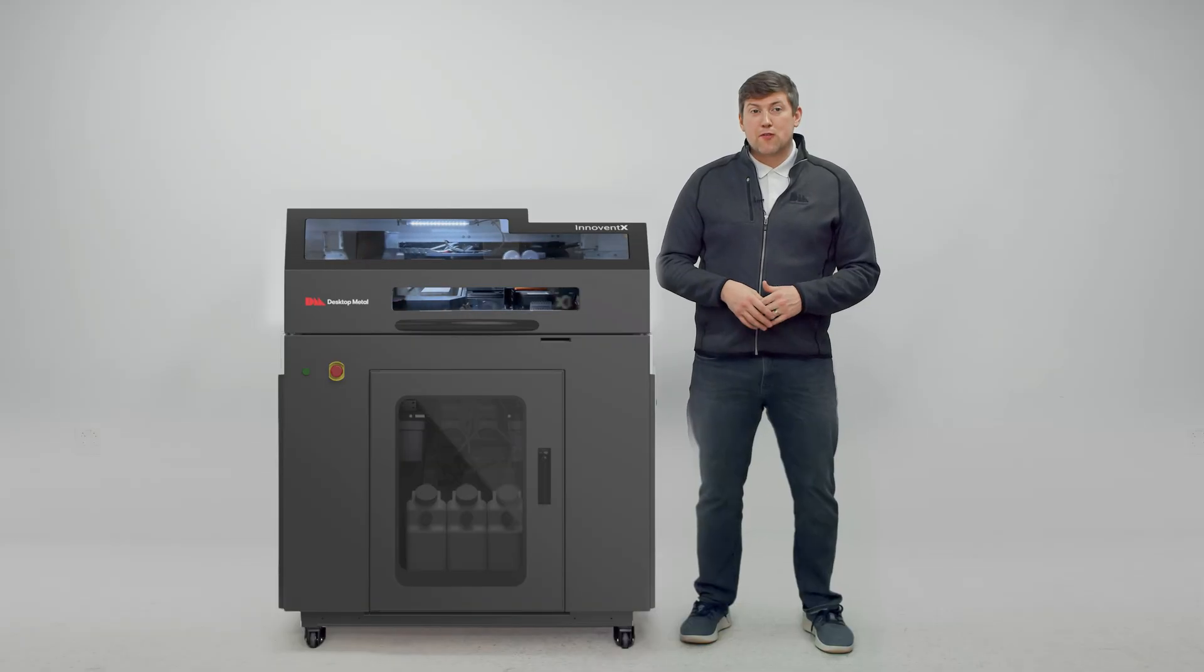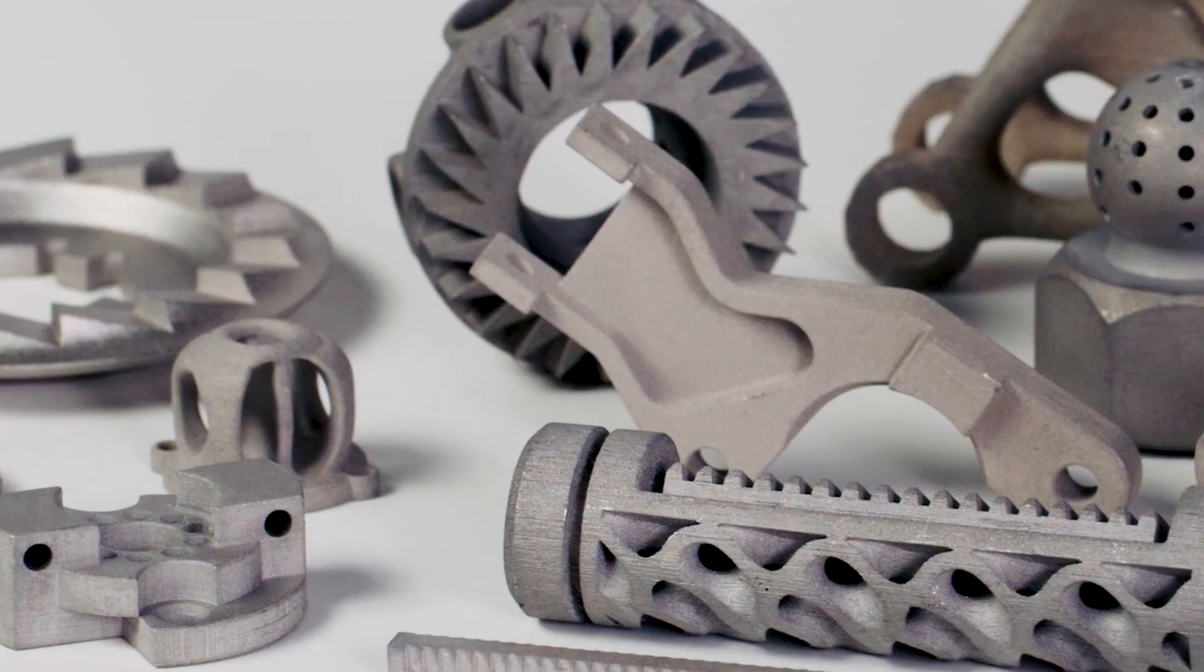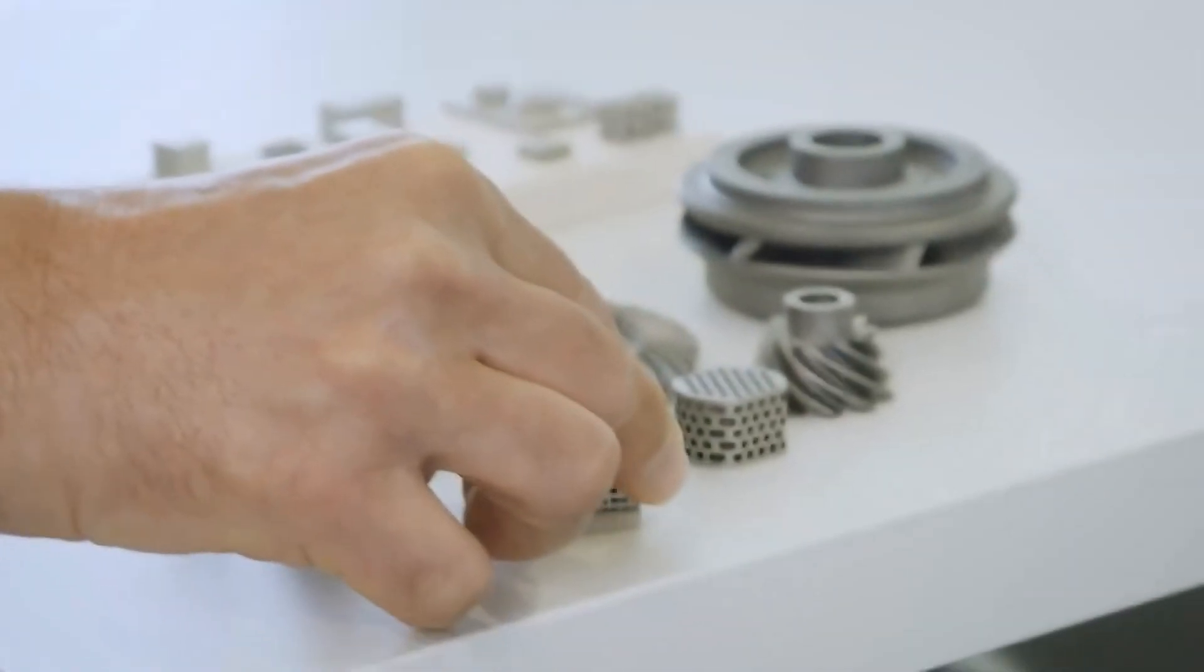The NMNX was built for material exploration. Over 100 materials have been printed by users of the NMNX, from stainless steel and copper to technical ceramics and composites.